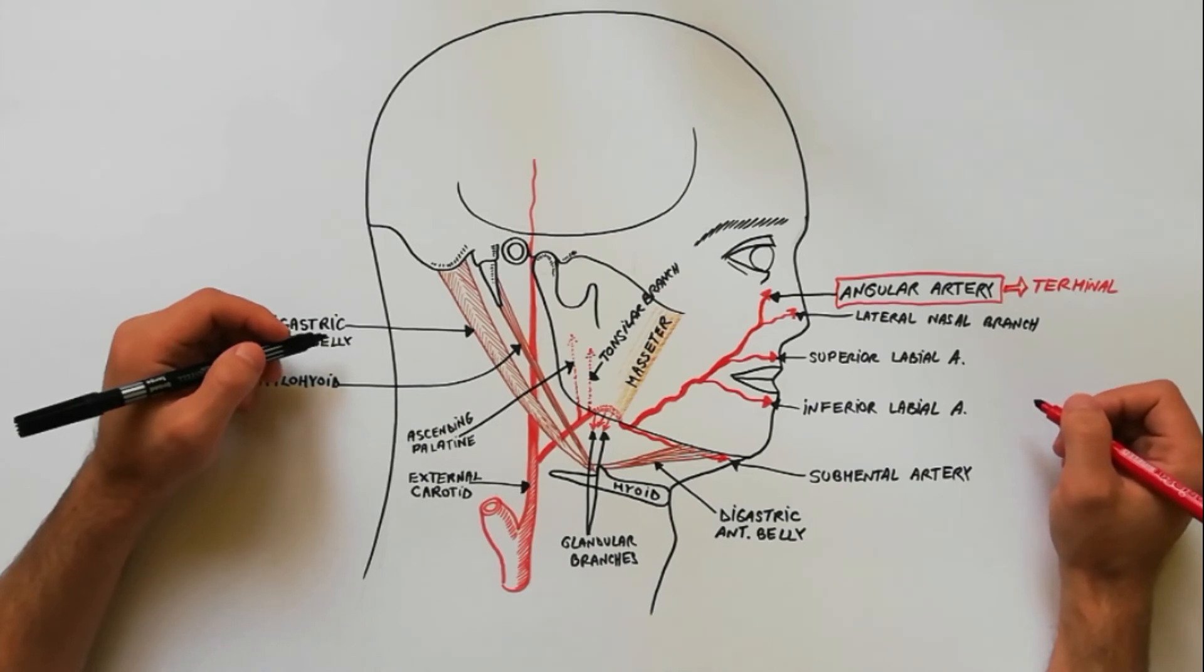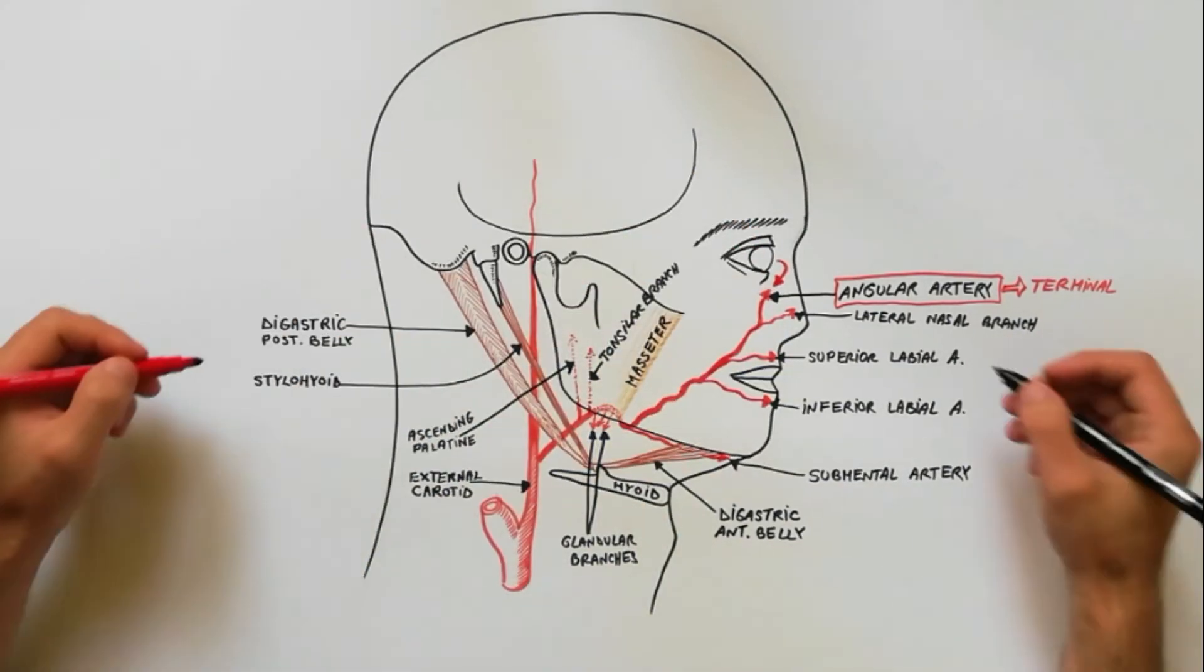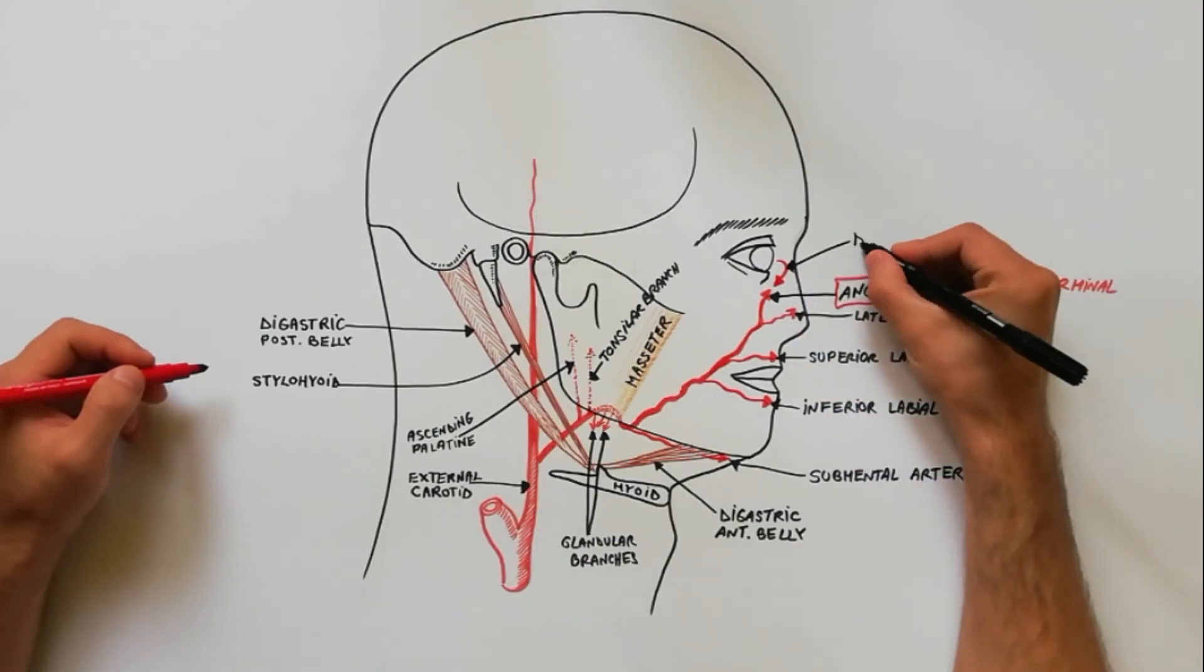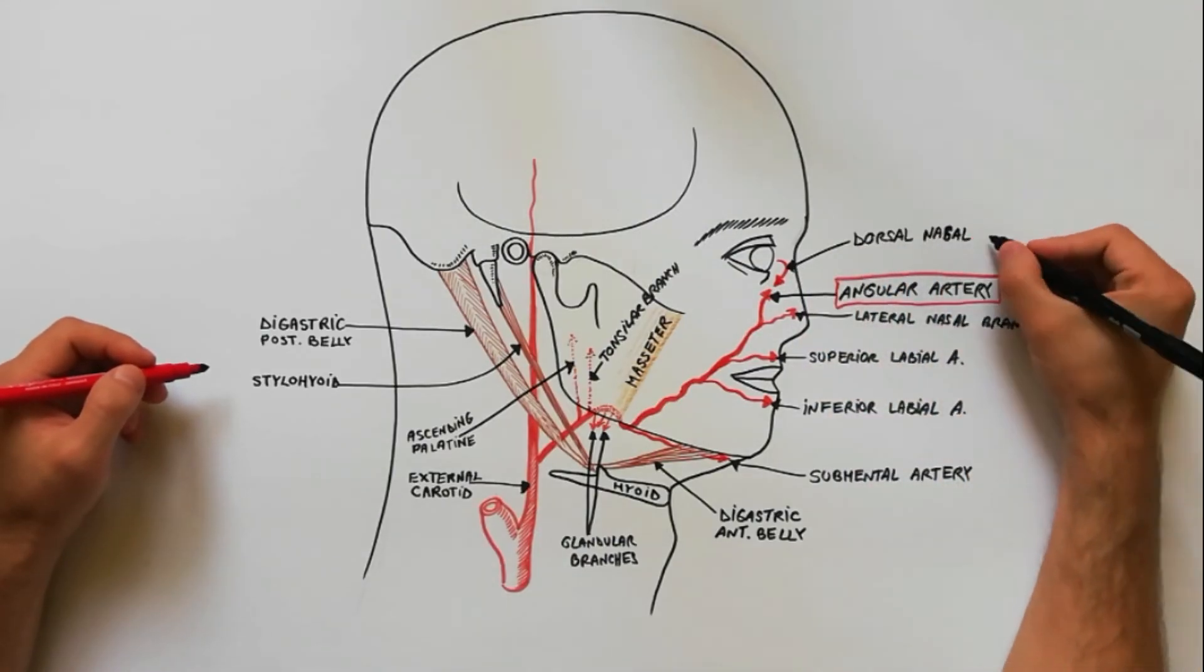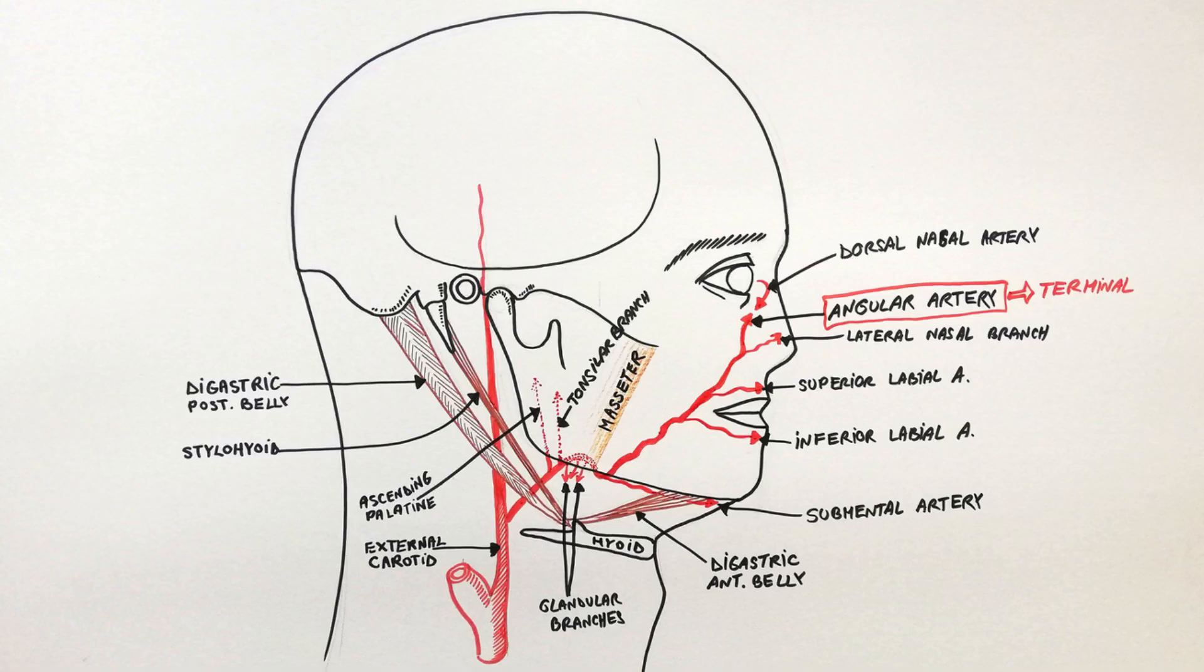Close to the medial angle of the eye, the angular artery anastomoses with the dorsal nasal artery, which is the terminal branch of the ophthalmic artery.